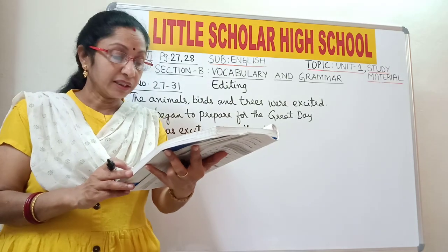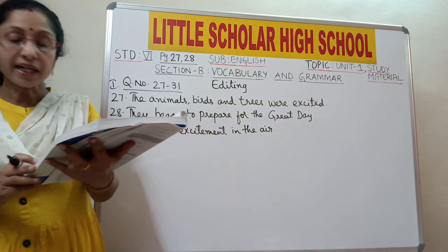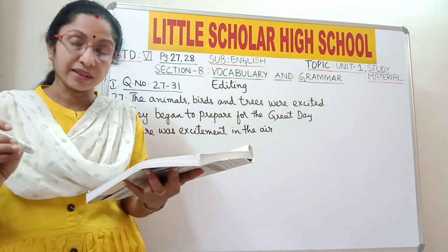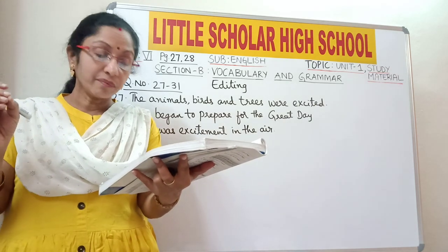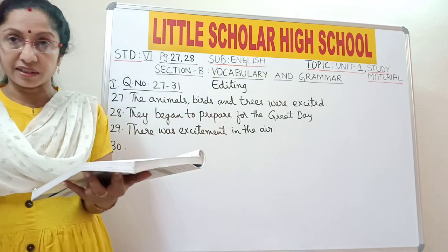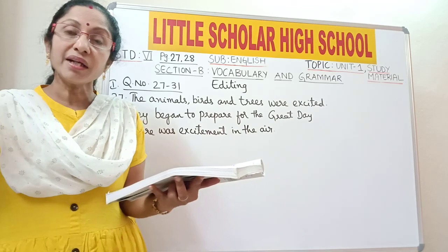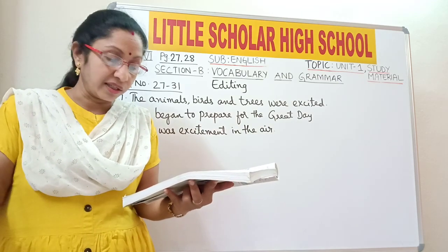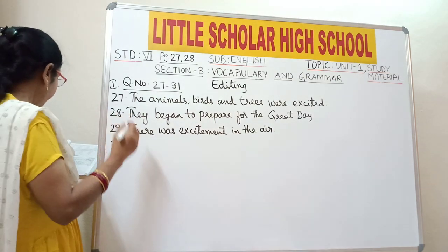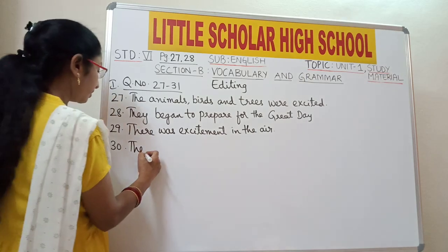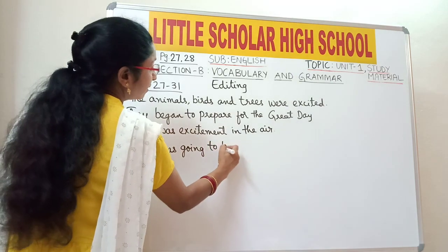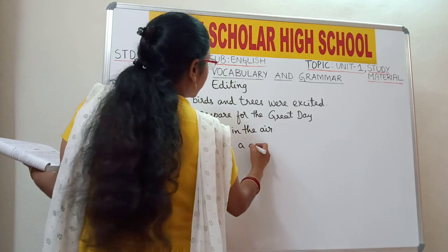Question number 30: 'There was going to be the grand contest.' We are not talking about a particular contest — it is just a competition, one contest. The article 'the' indicates a particular contest, but here it is not a particular one. So the article 'the' should be replaced with the article 'a'. Write: 'There was going to be a grand contest.'